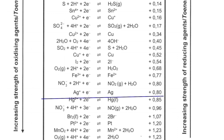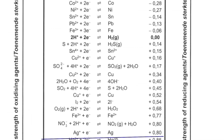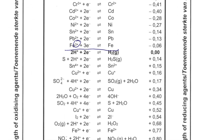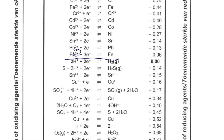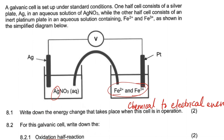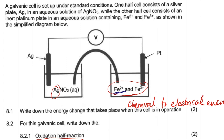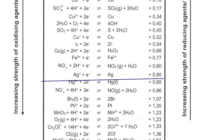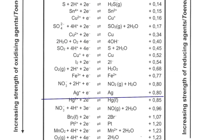We look for the iron half-reaction that consists of both Fe²⁺ and Fe³⁺. Some iron entries only have Fe²⁺, but the one we need has both Fe²⁺ and Fe³⁺. So we look for the half-reaction that has both, and that is the one we will use.